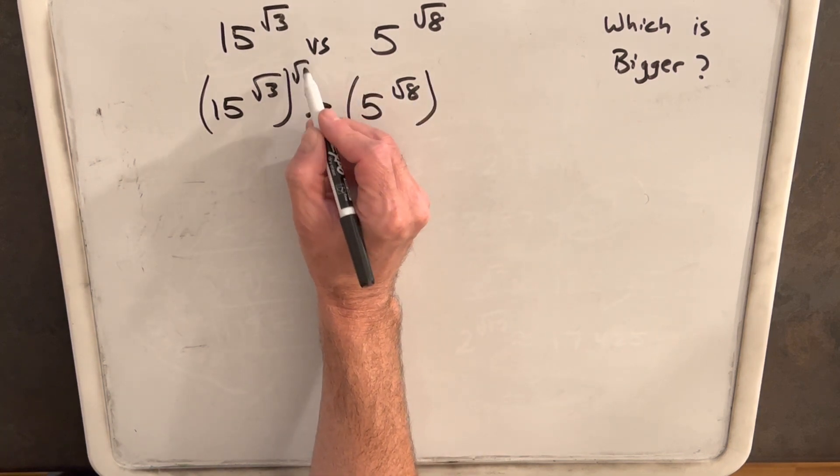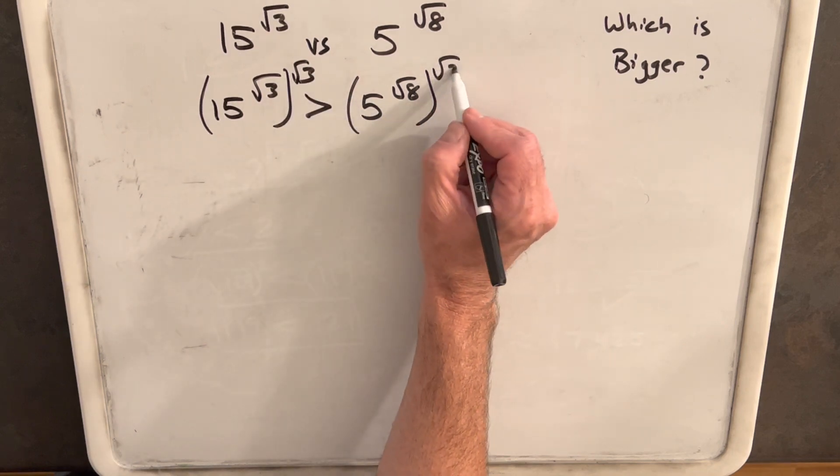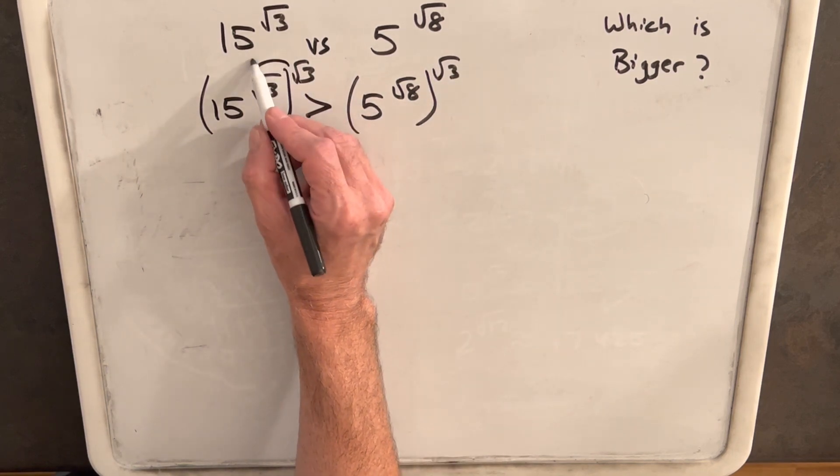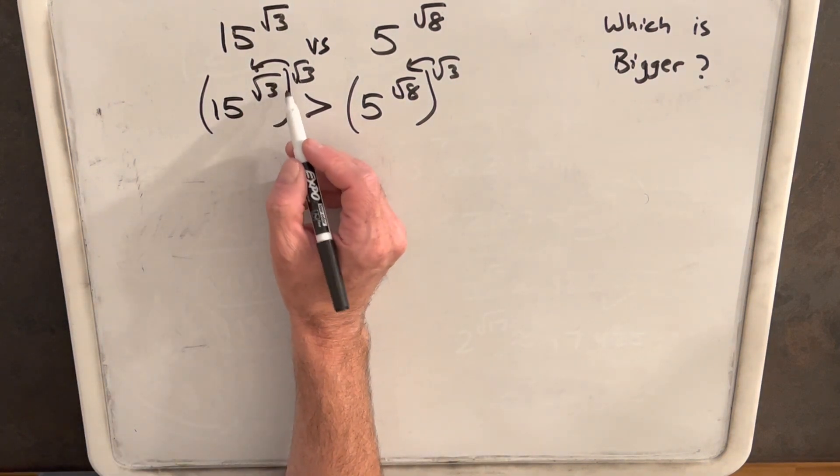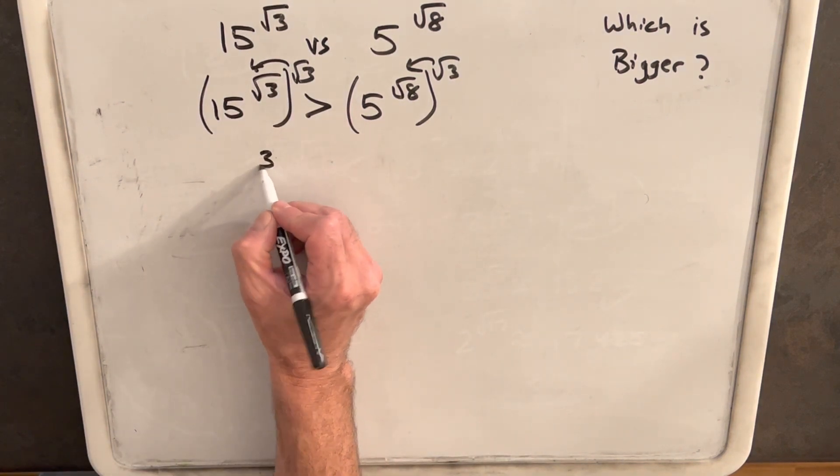So let's raise each side to square root of 3 and just multiply inside by this rule of exponents. And then we'll have square root of 3 times square root of 3 here is just going to be a 3.